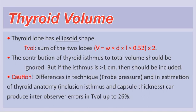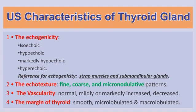We should be cautious about measurement technique differences, such as probe pressure, estimation of the isthmus, and estimation of the thyroid anatomy. Sometimes inclusion of the isthmus and capsule thickness can produce inter-observer errors of up to 26% of the total volume.